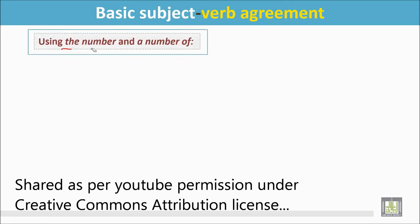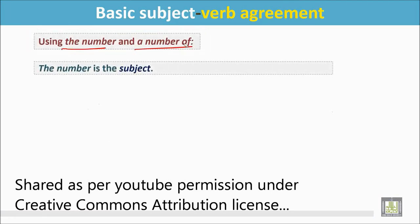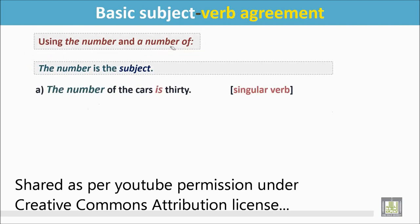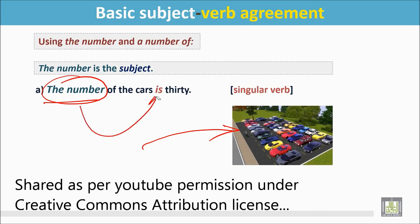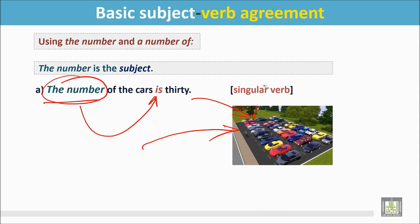Using 'the number' and 'a number of.' The number is the subject. See the example: The number of the cars is 30. In this picture, we see there are many cars, but the sentence has the subject 'the number,' and it is a singular subject, so the verb is singular. Though there are more than 30 cars, the verb is still singular.